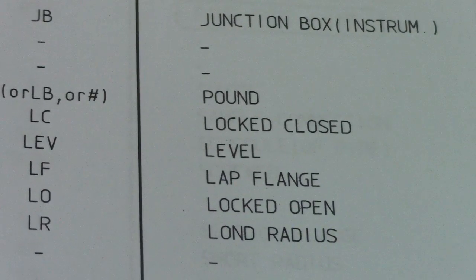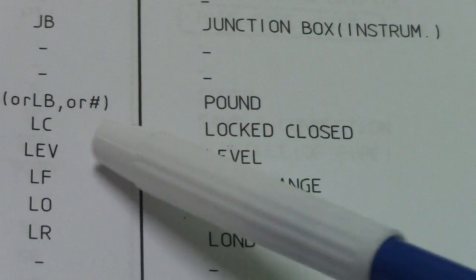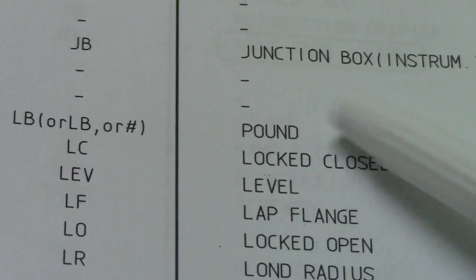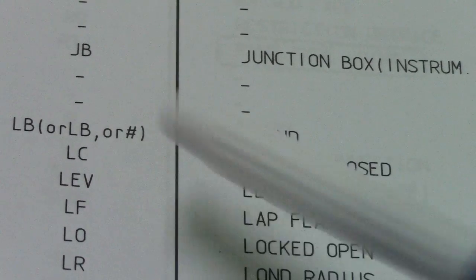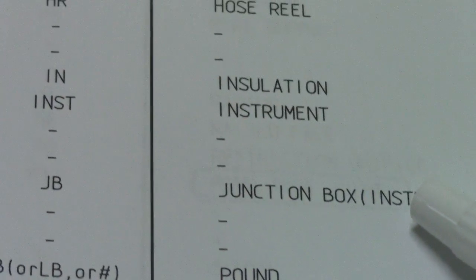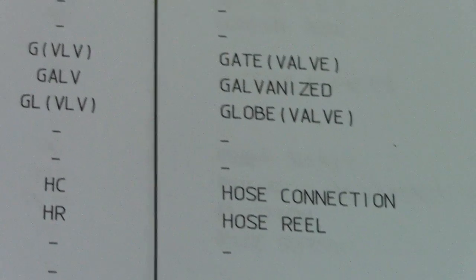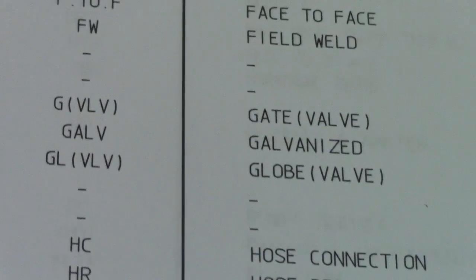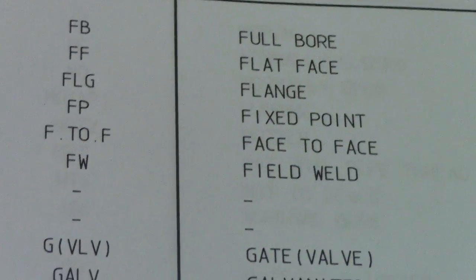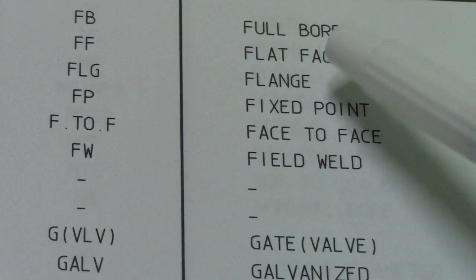LC is lock close. For instruments: II is instrument installation, HW is handwheel, HC is hose connection. LV is loop valve, GV is gate valve. FB is full bore, FF is flat face flange.